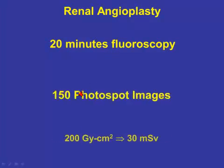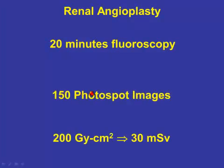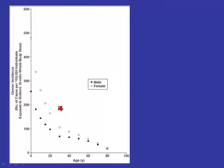If we take an IR procedure like renal angioplasty, you might use 20 minutes of fluoroscopy and generate 150 photo spot images. The Kerma area product — a median value I would expect to encounter in IR procedures — might be 200 gray centimeters squared, and that translates in an average-sized patient to an effective dose of 30 millisieverts.